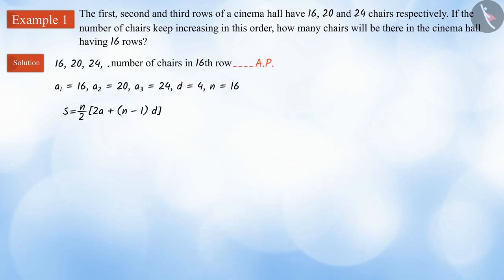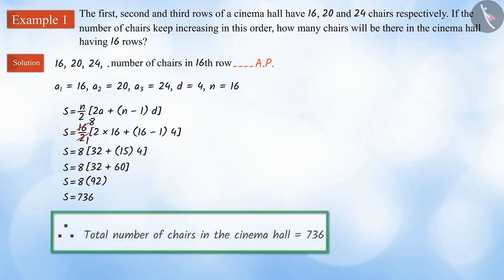Moving further, we substitute the values of a, n and d in this formula. On solving this, we get 736. Therefore, the cinema hall will have a total of 736 chairs.